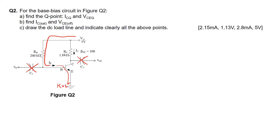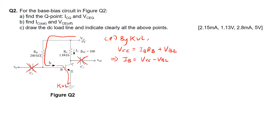Looking at this path of the IB current, to find ICQ we need to derive the formula for IB using this KVL loop. By KVL, the VCC is providing voltage to the base resistor RB as well as to the VBE junction. So VCC equals IB·RB plus VBE. Rearranging gives IB equals VCC minus VBE over RB. Substituting values: 5 volts minus 0.7 volts divided by 200 kilo-ohms gives IB equals 21.5 microamps.